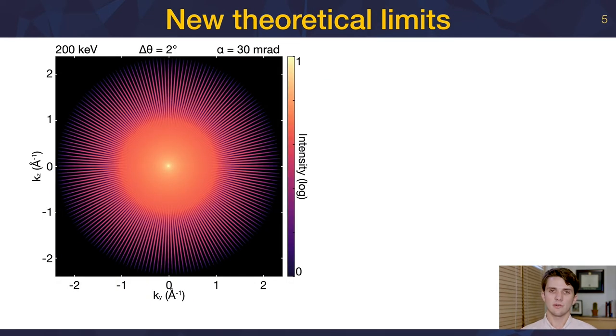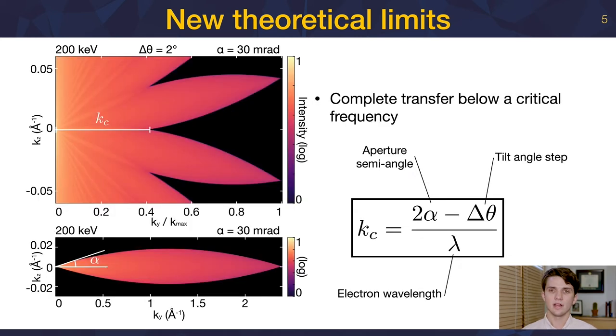We will now look at an aberration-corrected tomography CTF with more realistic parameters, a tilt-step of 2 degrees and an aperture semi-angle of 30 milliradians. To better understand the features, we will zoom in on this region of the CTF and look at two adjacent CTFs. Again, we see the region of complete information transfer. The extent of this region is bounded by a critical frequency labeled kc, which can be expressed using only a small angle approximation in half of the tilt-angle step. The critical frequency is the tilt-angle step subtracted from twice the aperture semi-angle, all divided by the electron wavelength. This makes sense. If we increase the aperture semi-angle, we increase the takeoff angle of the CTF, and we increase the overlap of adjacent CTFs, which increases the critical frequency. This critical frequency is used to define the relationship between resolution and object size.